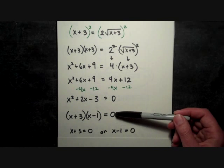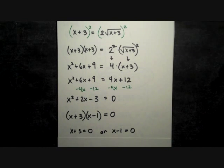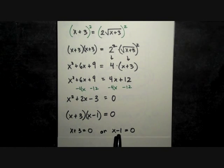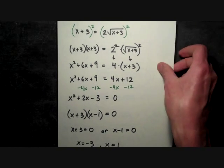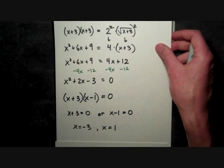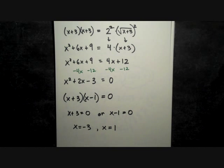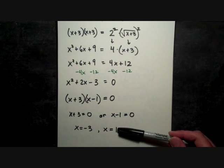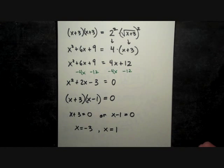The 0 product rule. It's very important that we have the 0 there. So set each factor equal to 0, and that gives you two potential solutions. Notice I said potential solutions. We have to check these to make sure that they work: -3 and 1.